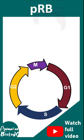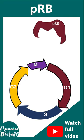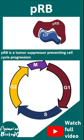PRB is a tumor suppressor protein. It generally stops cell cycle progression and thereby cellular growth. It prevents the transcription factor E2F, and that's why it's a potent tumor suppressor.